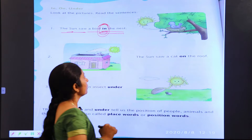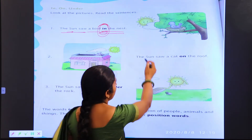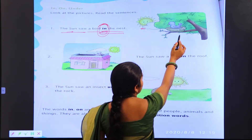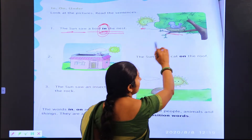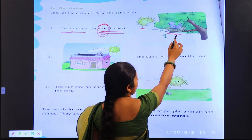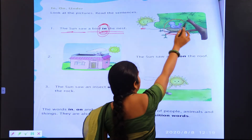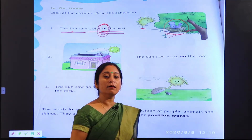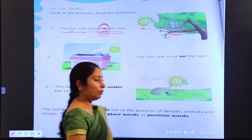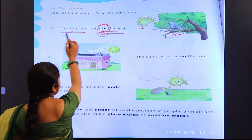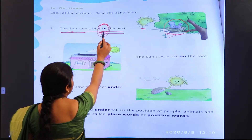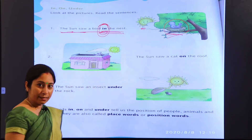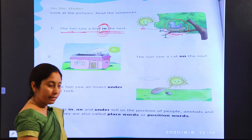Yeh dekhiye — yahan par sun nazar aa raha hai, ek tree hai, tree par ek nest hai. Ghosle ke andar baitha hua hai ek bird. So the sentence is: the sun saw a bird in the nest.